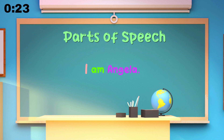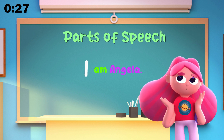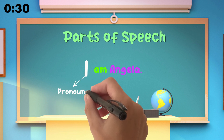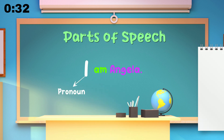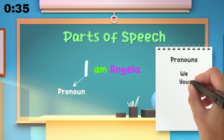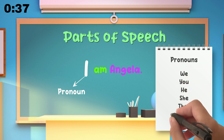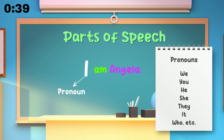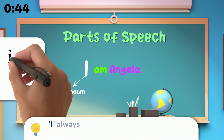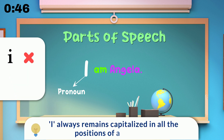The word 'I' is a part of speech. Can you guess which part of speech it is? The word 'I' is a pronoun. Here are some other pronouns that we use in English: we, you, he, she, they, it, who, etc. Remember, unlike all the other pronouns, 'I' always remains capitalized wherever you put it in a sentence.